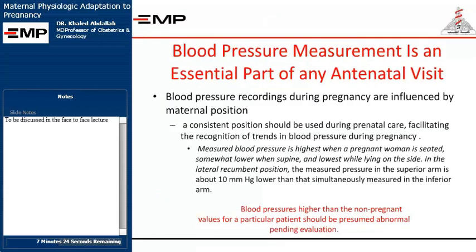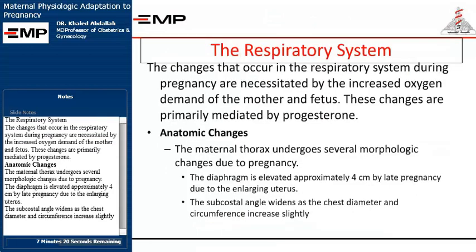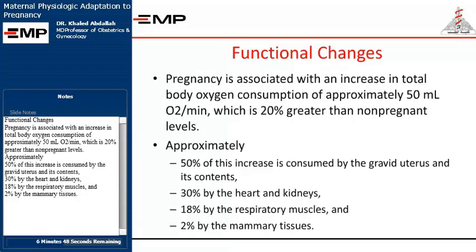The respiratory system: changes that occur during pregnancy are necessitated by the increased oxygen demand of the mother and fetus, and are primarily mediated by progesterone. Anatomically, the diaphragm is elevated approximately 4 cm by late pregnancy due to the enlarging uterus, and the subcostal angle widens as chest diameter and circumference increase slightly. Functionally, pregnancy is associated with an increase in total body oxygen consumption of approximately 50 mL O2/min, which is 20% greater than non-pregnant levels. Approximately 50% of this increase is consumed by the gravid uterus and its contents, 30% by the heart and kidneys, 18% by the respiratory muscles, and 2% by the mammary tissues.